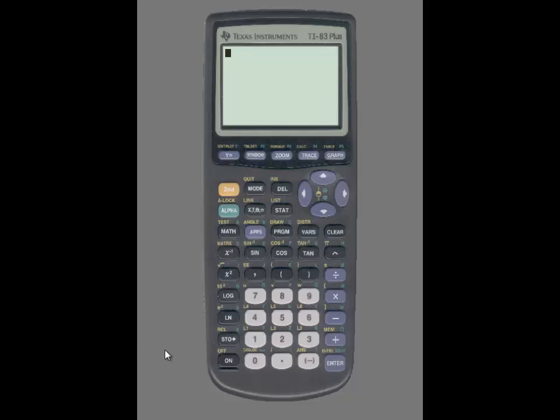Using that information, I'm going to access the binomial PDF function on the calculator. In order to do so, you'll first need to press the second key and then press vars so you can access the distribution.